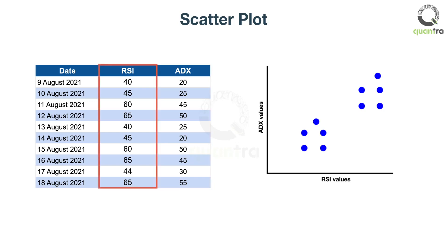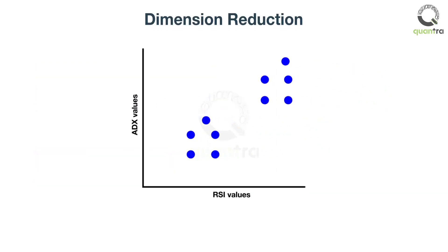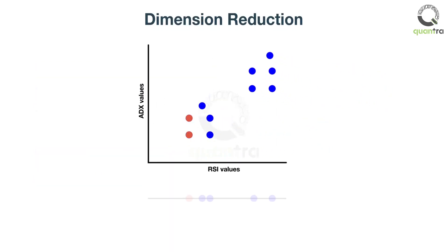But that would lead to loss of information. If only RSI was kept, the data points marked in red will come together. Earlier, the two points were at a distance of 5 units from each other. But now it seems like they are the same point. Thus, the information that these two points are different and not the same is lost.